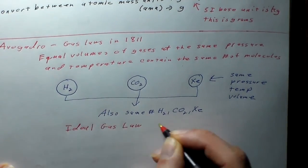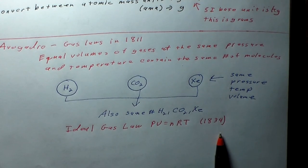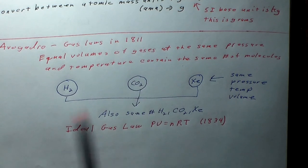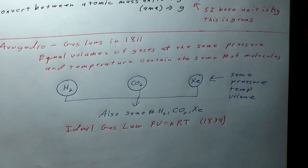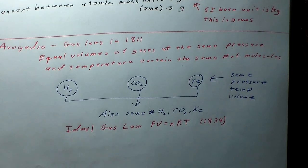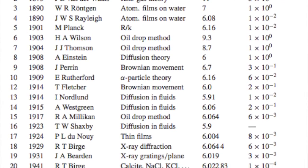The ideal gas law PV = NRT was formulated in 1834 by Clapeyron, though much of his work was based on what Avogadro had figured out. Avogadro worked this out in 1811 and died in 1856. During the intervening years there were attempts to figure out the actual value of his number — Avogadro himself never knew what it was. It wasn't discovered until a few decades after his death.